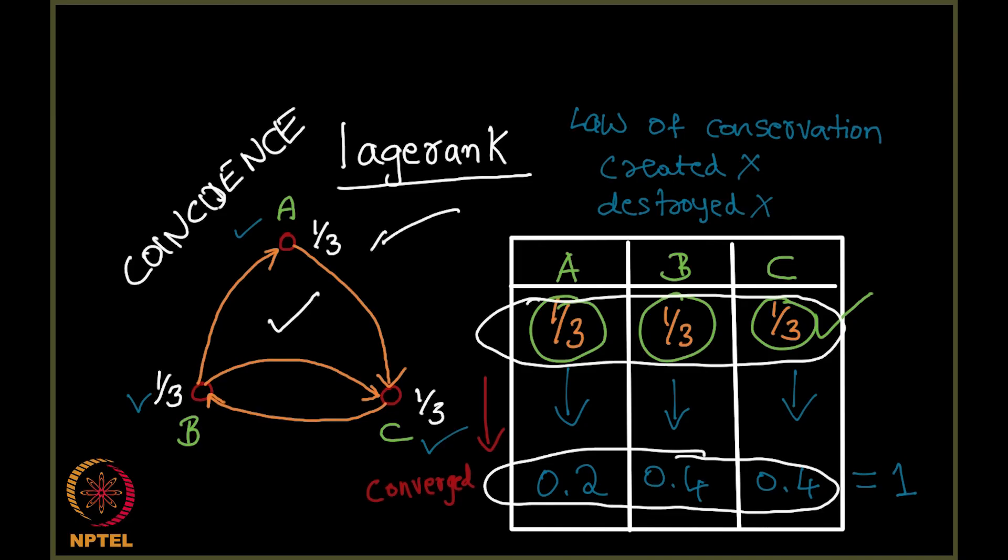In this case, the graph I considered looks slightly trivial. By trivial, I mean it's just 3 vertices and 4 edges. Maybe it looked very symmetric, and that's why the convergence happened.